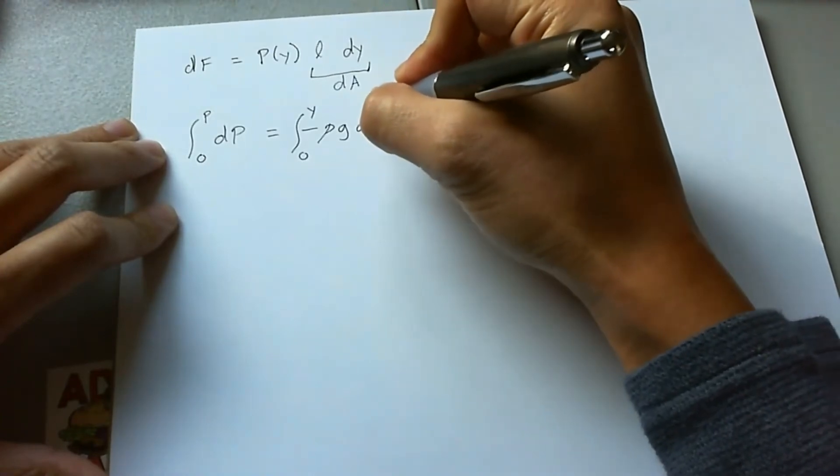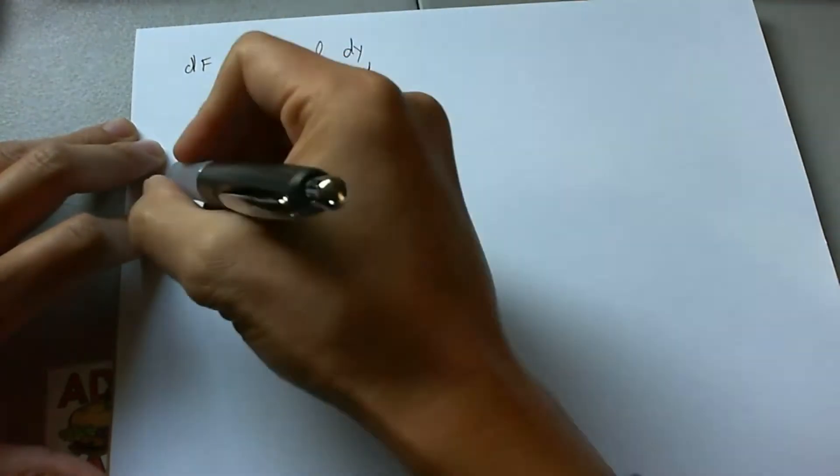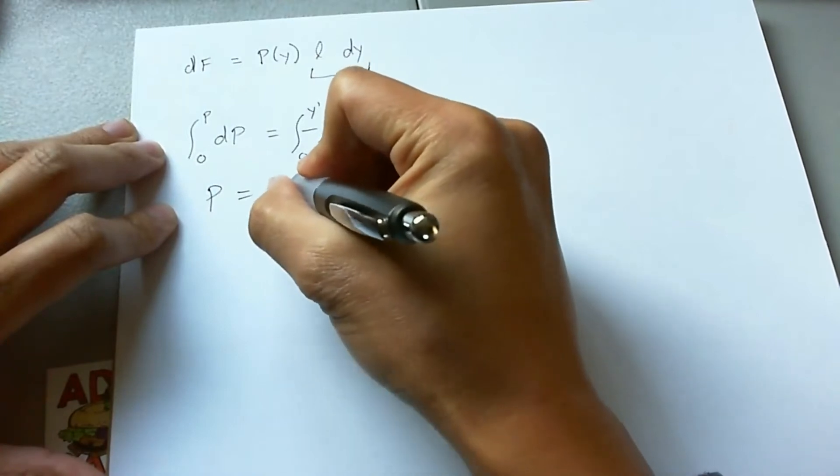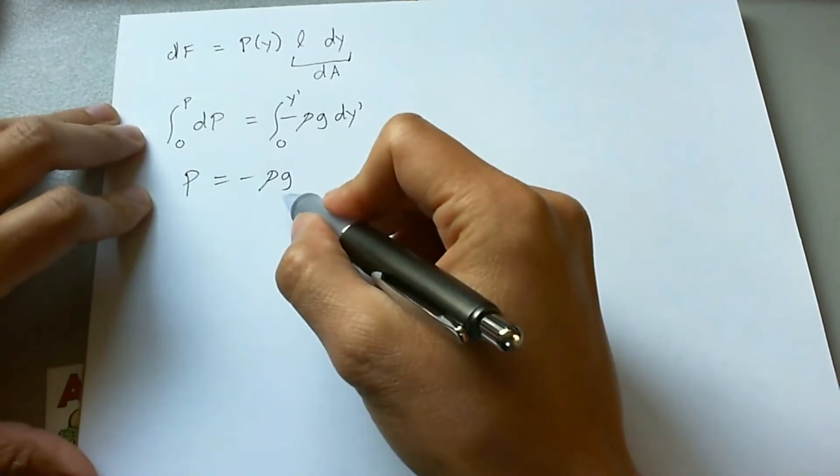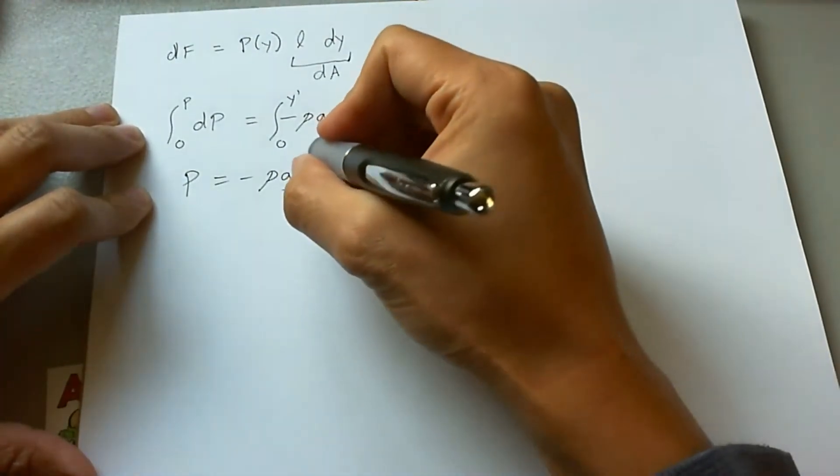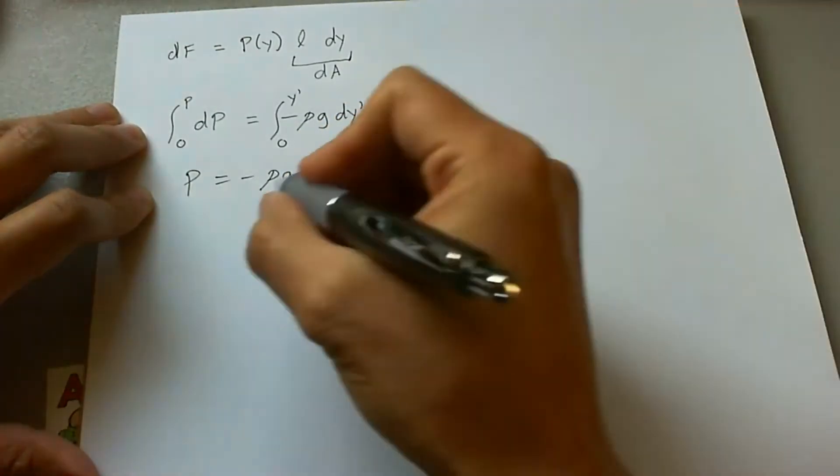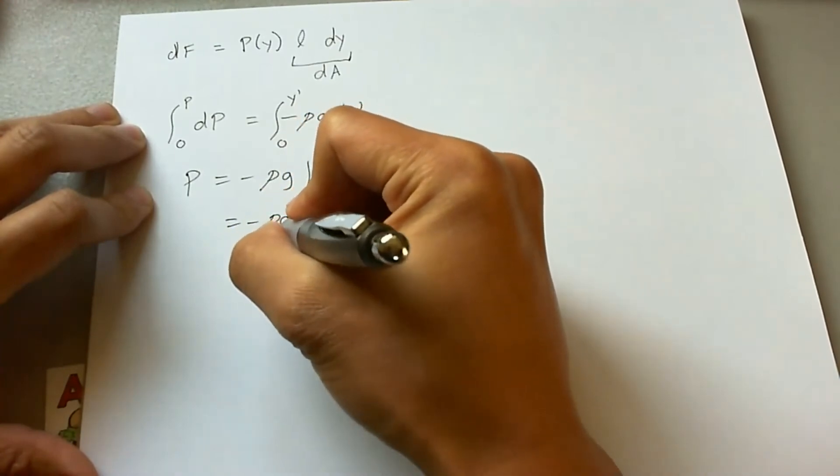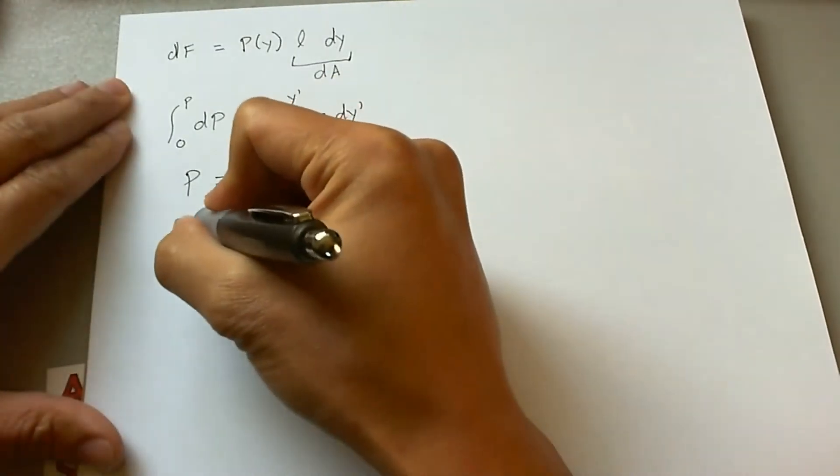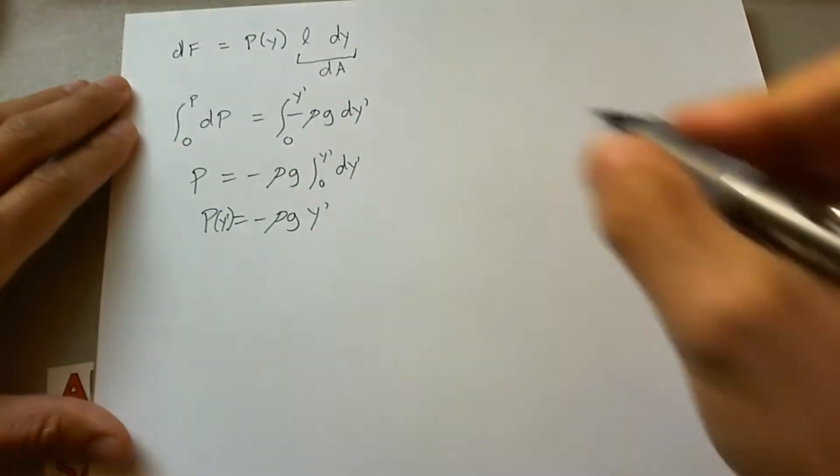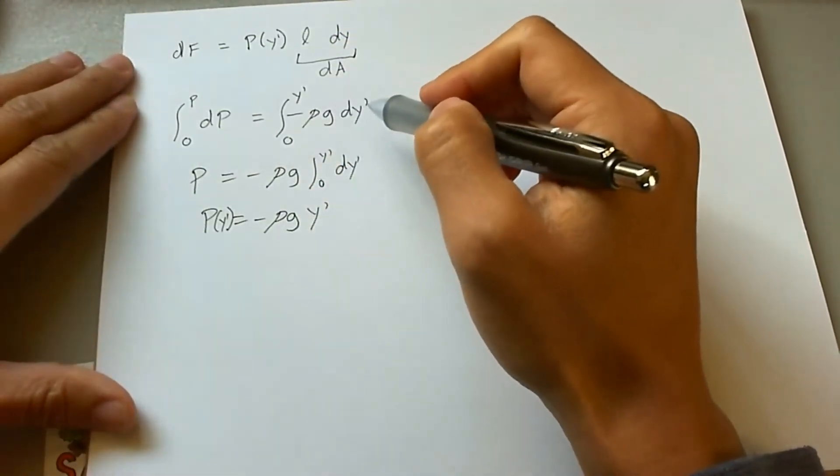So for now, let me go ahead and put a prime here so we at least have that differentiation down. P is equal to -ρg because the density of water does not change with depth, and g does not change with depth, or it's pretty negligible anyway. And we're going to have from zero to y' dy', which the simple solution then becomes -ρg y'. So this is the function of P with respect to that y', which the prime is also going to carry up here since we're now relabeling y as y'.